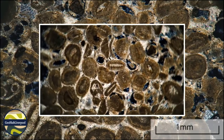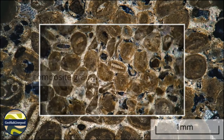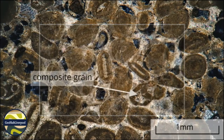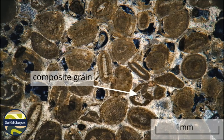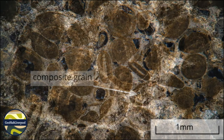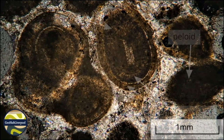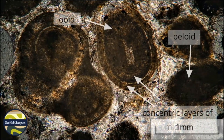Under cross polars, the internal structure of the ooids and composite grains can be seen more easily. These are best viewed under higher magnification. This view shows the thin concentric layers of micrite in an ooid. To the right there is a peloid,